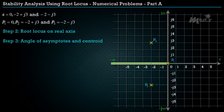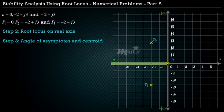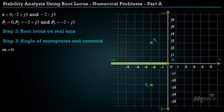Next, find the angle of asymptotes and centroid. Since there are three poles, the number of root locus branches is 3. There are no finite zeros (m = 0), so all three root locus branches end at zeros at infinity, and the number of asymptotes required is 3 (n = 3).